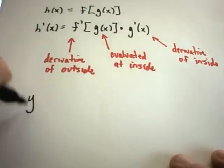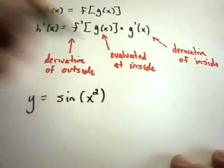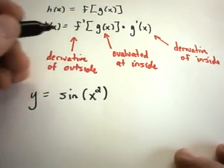So suppose we have the function y equals, let's say, sine of x squared, and we want to take the derivative of this.